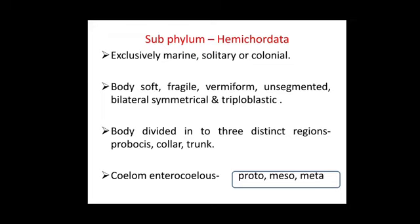The body is divided into three distinct regions: proboscis, collar, and trunk. The coelom is enterocoelomic, meaning it originates from outgrowths or outpouches of the digestive tract and is endodermal in origin. There is a protocoel, mesocoel, and metacoel.